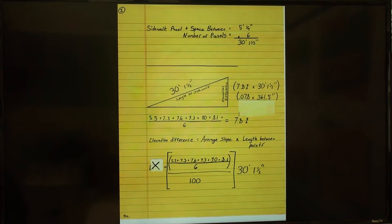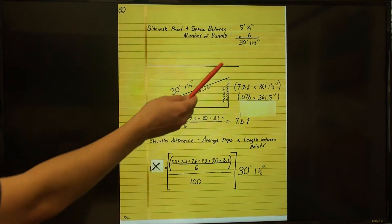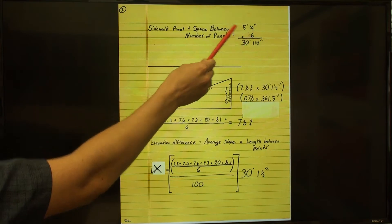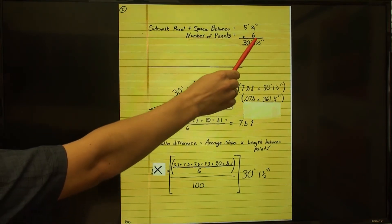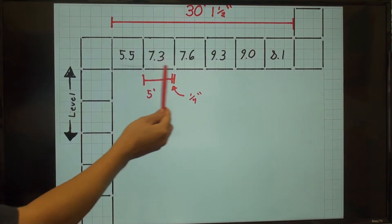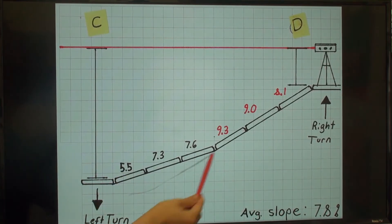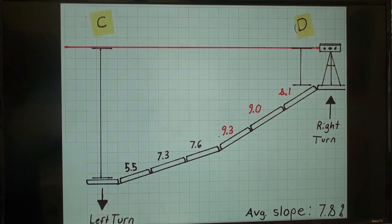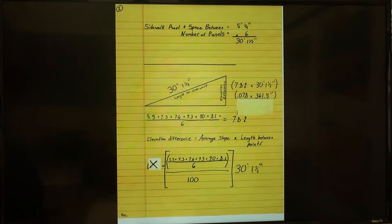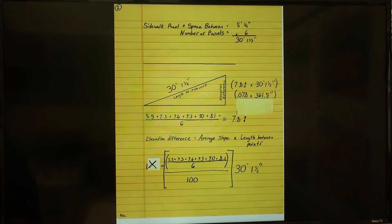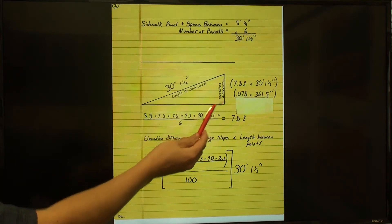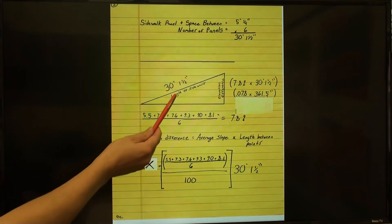Currently, the length of the existing sidewalk is 30 feet 1.5 inches. That's a 5 foot panel, plus the quarter inch separation between each of the panels, multiplied by the 6 panels we have between the two turns. The slope of each panel is noted here, and the average slope is 7.8%. The reason we measure the slopes in percent is to make it to where we actually don't need to do any real trigonometry. All we have to know is that the elevation difference between the two ends of the path is equal to the slope that we measured multiplied by the length between the two points.